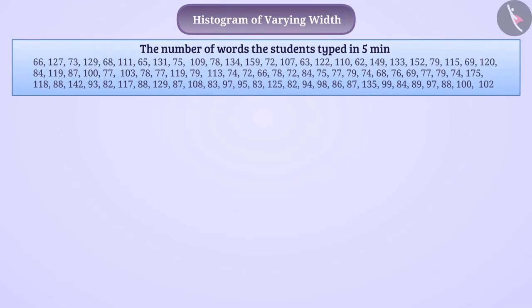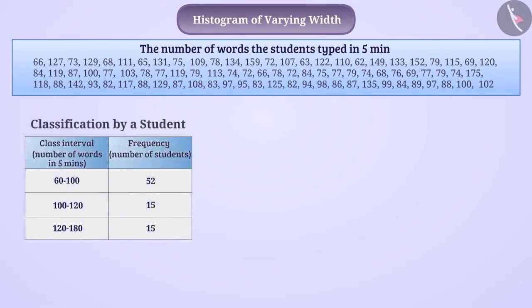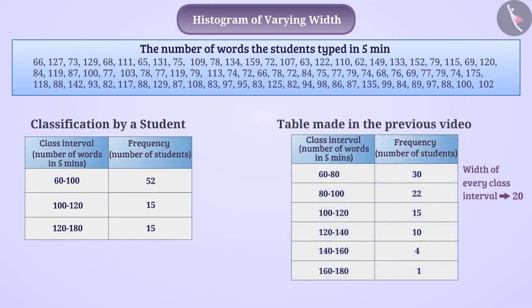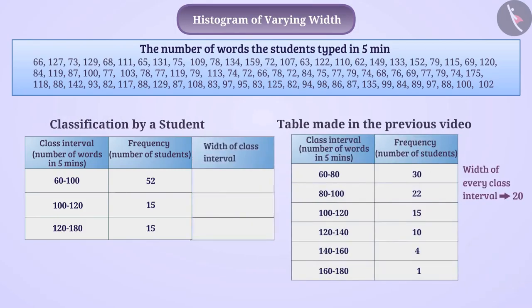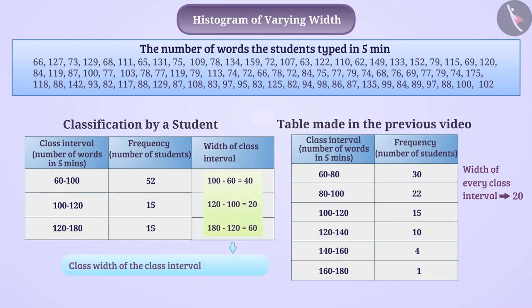Suppose a student classified the data in this way. Is the table the same as the one made in the previous video? No. Here we see that the class width of the first class interval is 100 minus 60, equal to 40. The class width of the second class interval is 120 minus 100, equal to 20, and the class width of the third class interval is 180 minus 120, equal to 60. Thus the class widths are different in this frequency distribution table.